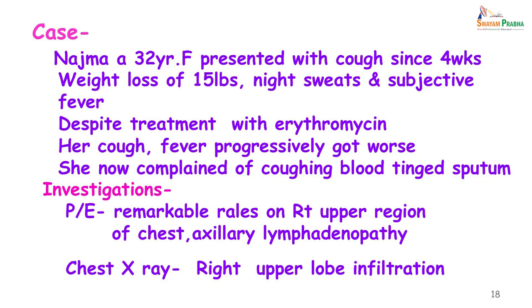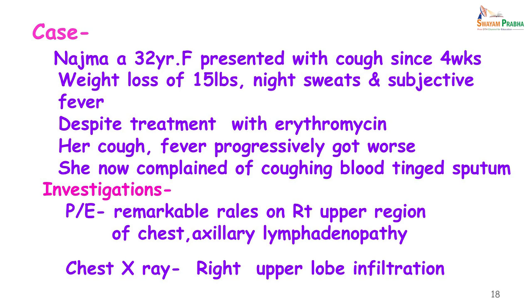Let us see a case: Najma is a 32-year-old female who presented with cough since 4 weeks, weight loss of 15 pounds over the last 1 month, night sweats, and subjective fever that usually rose in the evenings. Despite treatment with erythromycin, her cough and fever progressively got worse and she complained of blood-stained sputum. On examination she had crackles in the right upper region of the chest, axillary lymphadenopathy, and her chest X-ray showed a right upper lobe infiltration.